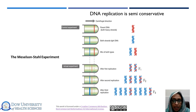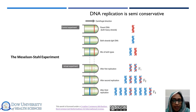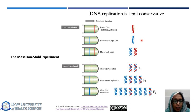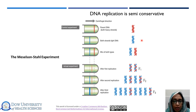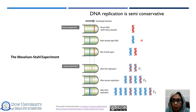If DNA replication was semi-conservative, the daughter molecules should be half old and half new and therefore reflect different densities. For this purpose, they grew E. coli cells in a medium containing the heavy isotope of nitrogen referred to as N15 — shown as red strands — rather than the usual nitrogen N14, referred to as blue strands. This isotope was inserted during the biochemical process of adenine and pyrimidine synthetic metabolism and incorporated into newly synthesized DNA strands. After many cell generations in N15 nitrogen, the DNA of the cells was labeled with the heavy isotope.